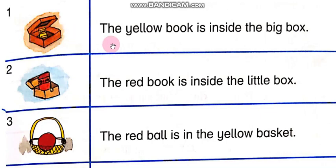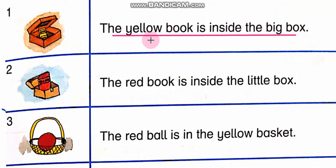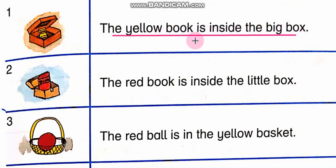The sentence will be: The yellow book is inside the big box. Yeh ek bada box hai, aur iske andar ek book hai jiska color yellow hai. The yellow book is inside the big box. Yellow book big box ke andar hai.